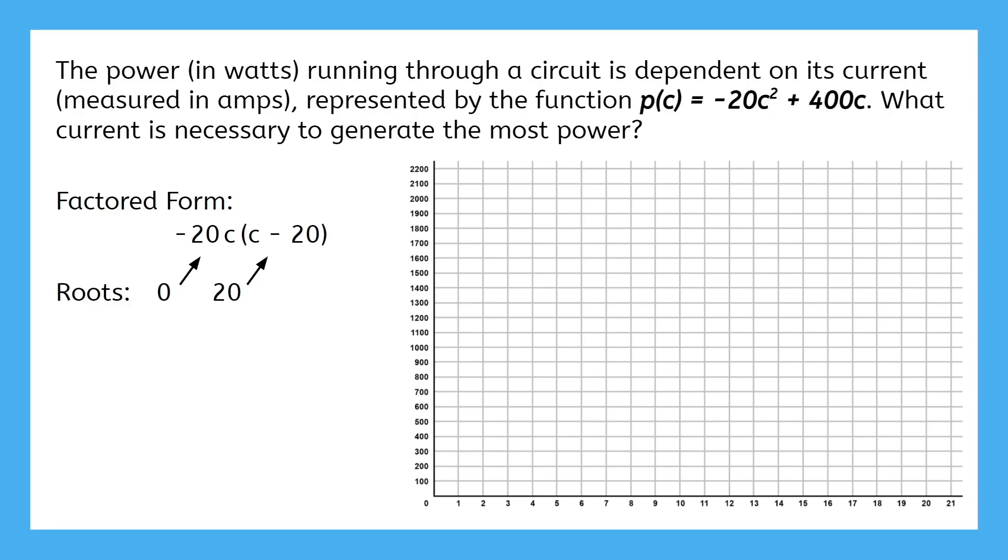Remember, roots identify the x-intercepts, or in this case the c-intercepts, so we can plot points at (0,0) and (20,0). The vertex will be in the middle of the roots at 10. To find how high the vertex is, we input that value into the function, which comes out to 2000, making the vertex at (10, 2000).